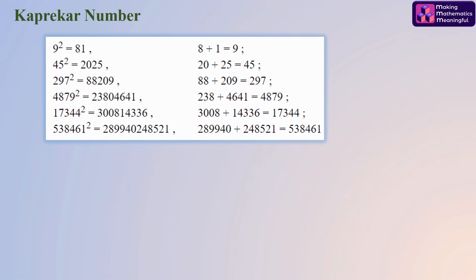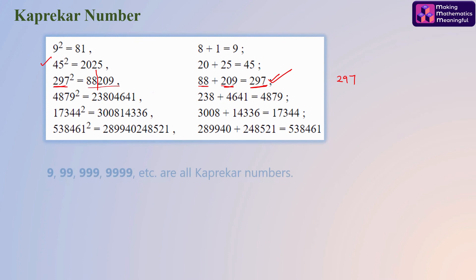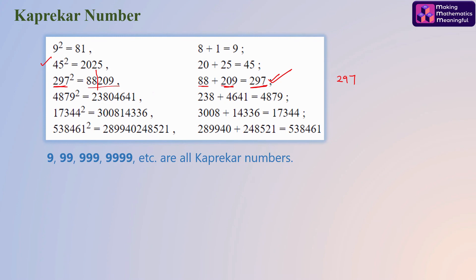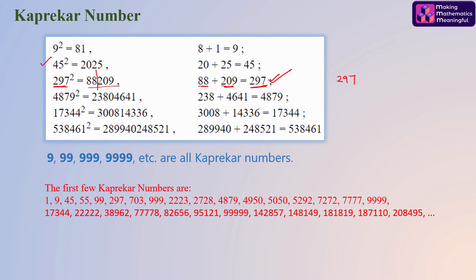A few more examples: for 297, consider the square of this number, divide it into two parts, and observe that their sum is the number itself — so 297 is a Kaprekar number. Also, 9, 99, 999, and so on are all Kaprekar numbers. The first few Kaprekar numbers are listed for your reference. There are infinitely many Kaprekar numbers.